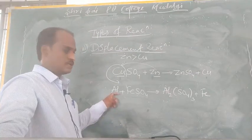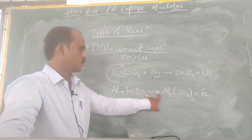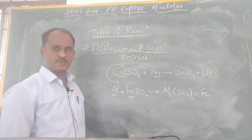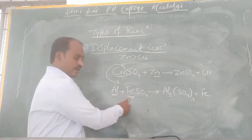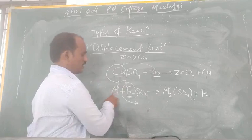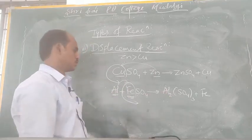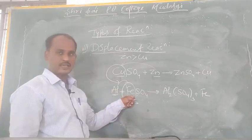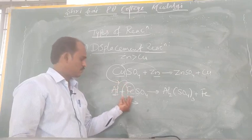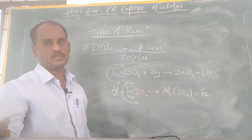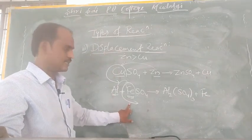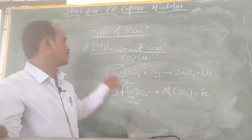Why does aluminum displace iron? Because aluminum is more reactive than iron. So aluminum displaces iron from FeSO₄ to give Al₂(SO₄)₃. Displacement reaction is a reaction in which the more reactive element displaces the less reactive element — that is called a displacement reaction.